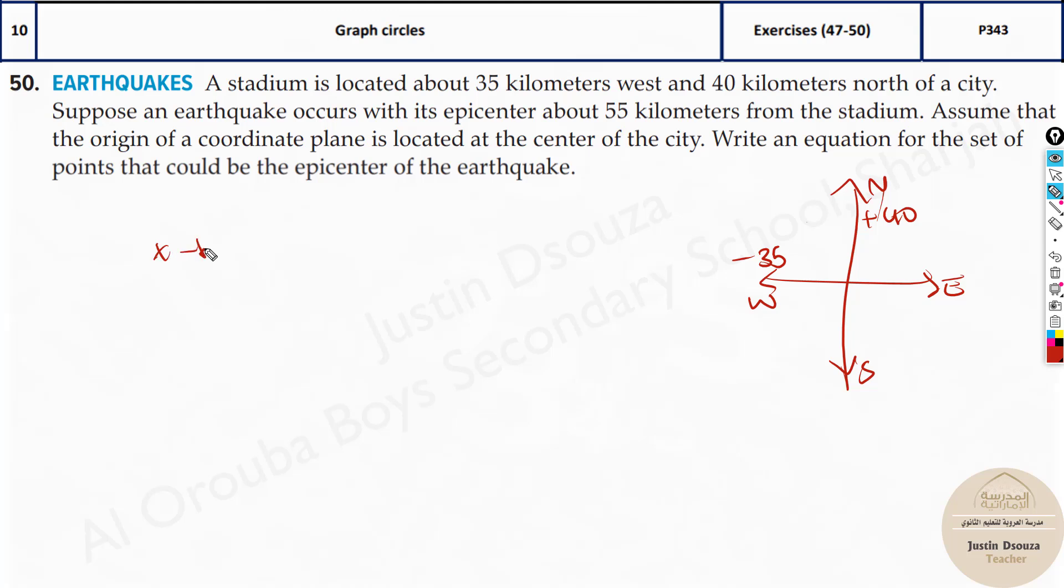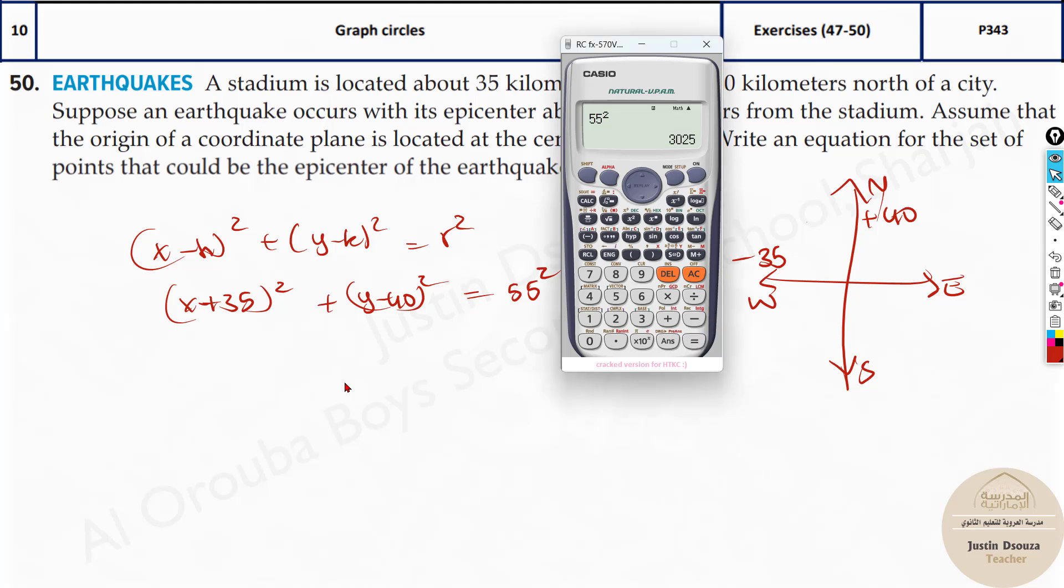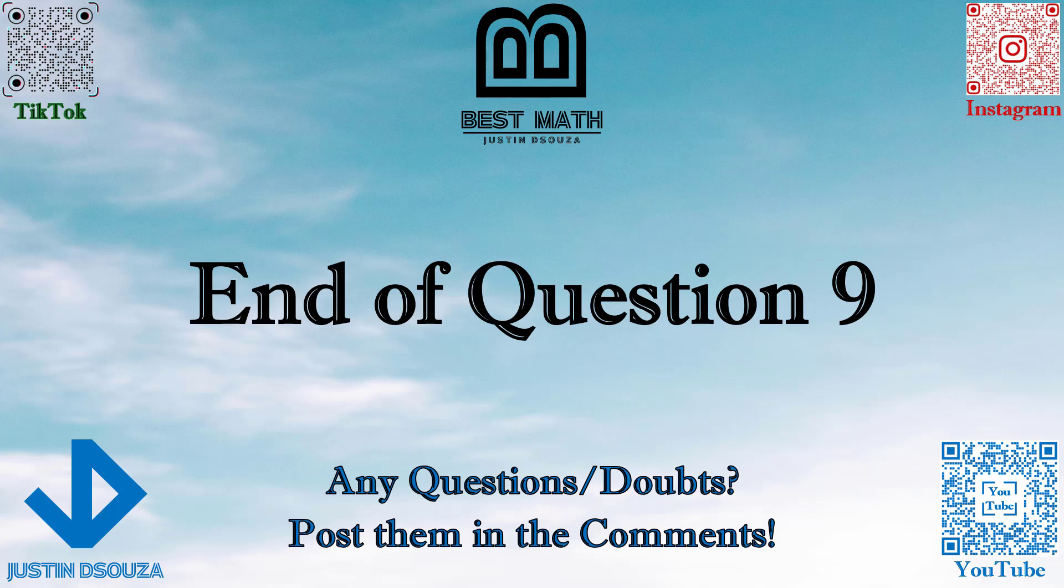So all you need to do is x minus h the whole squared plus y minus k the whole squared equals r squared formula. So x minus now over here will be plus 35 whole squared plus y minus 40 the whole squared equals r squared is over here 55 squared. Just put it in the calculator. You will get the answer. The square of 55 is 3025. So that is the answer you can see over here. That is the end of this question.